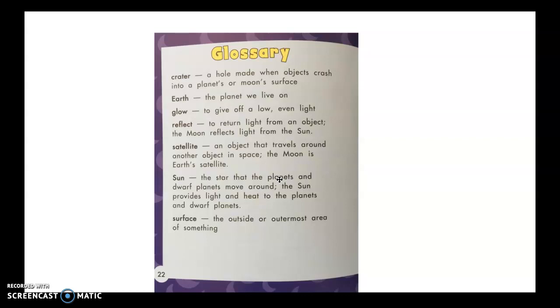Satellite. An object that travels around another object in space. The moon is Earth's satellite. Sun. The star that the planets and dwarf planets move around. The sun provides light and heat to the planets and dwarf planets. Surface. The outside or outermost area of something. That's the glossary.